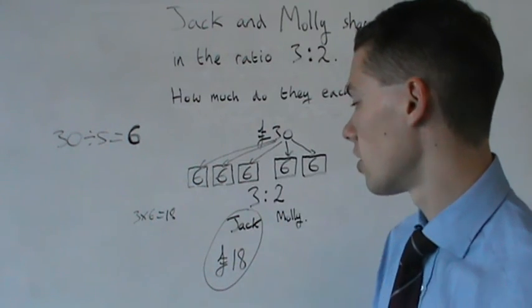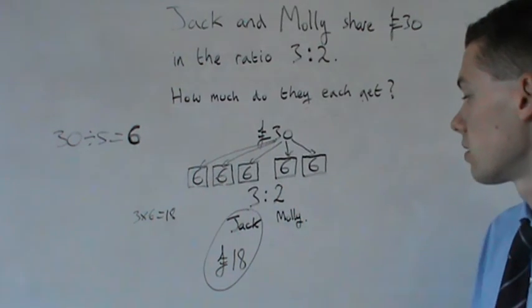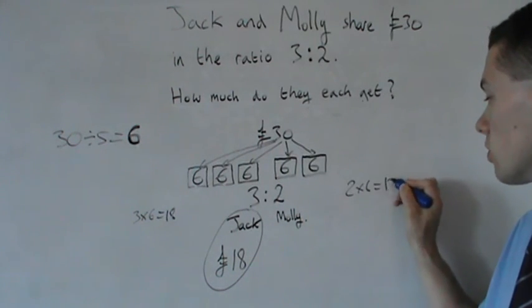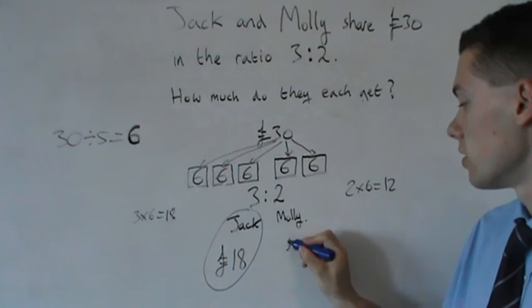So that's Jack sorted, Jack's got 18 pounds in total. Molly has got 2 lots of 6. Now we know that 2 times 6 equals 12. So Molly has got 12 pounds in total.